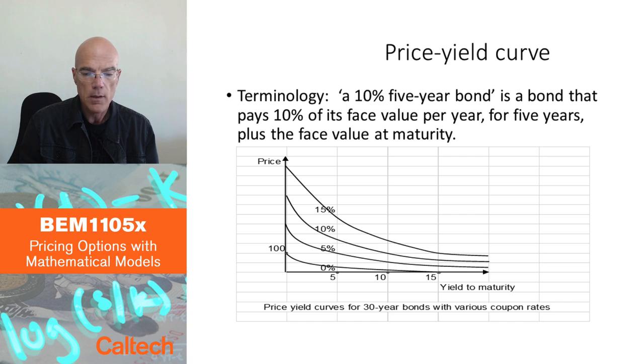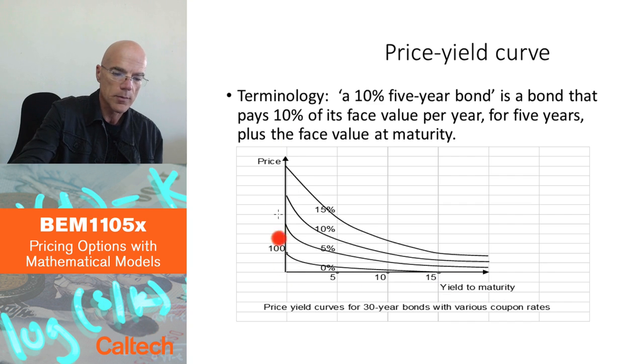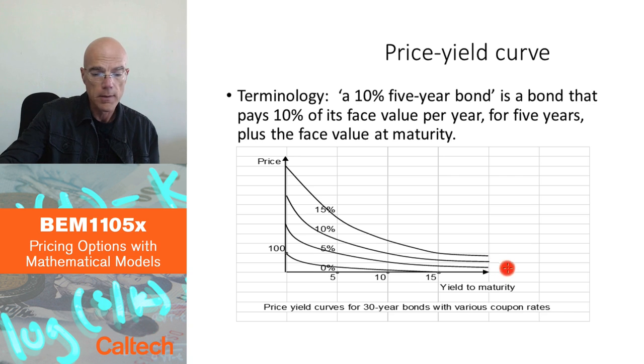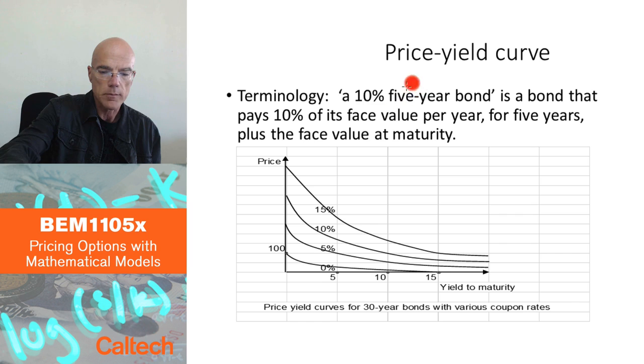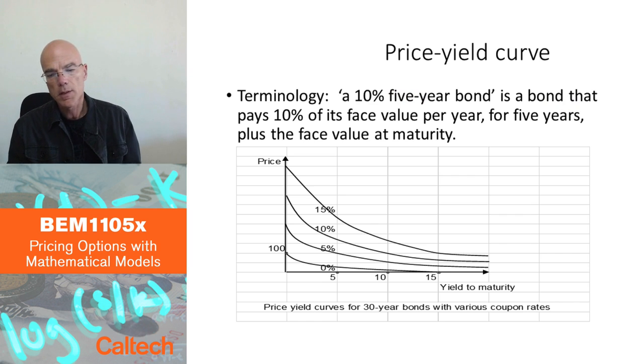This is called a price-yield curve. I have yield to maturity here on the x-axis and I have the price of the bond on the y-axis. As we just said, the price is going to be a decreasing function of the yield. Here's a bit of terminology: If I say I'm dealing with a 10% five-year bond, it means it's a bond that matures in five years and pays 10% of its face value per year.